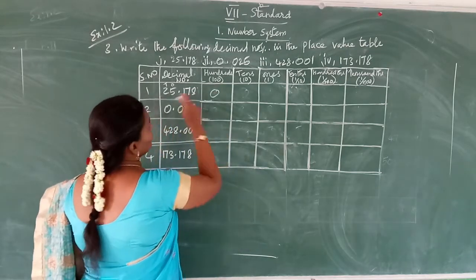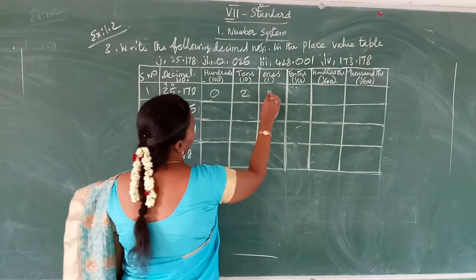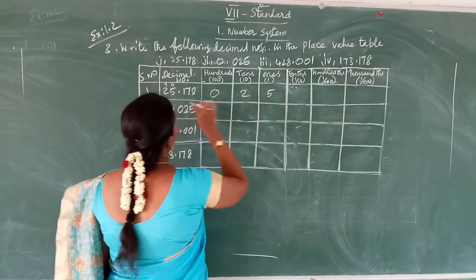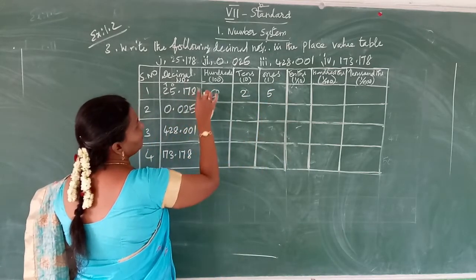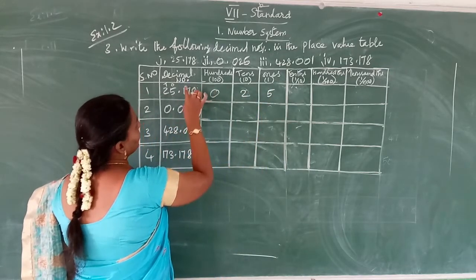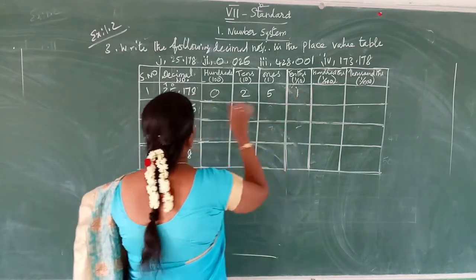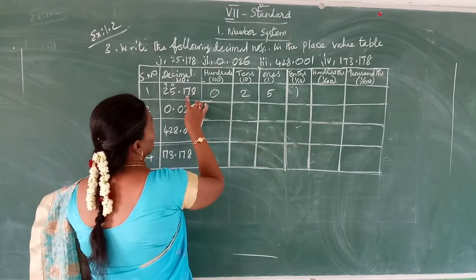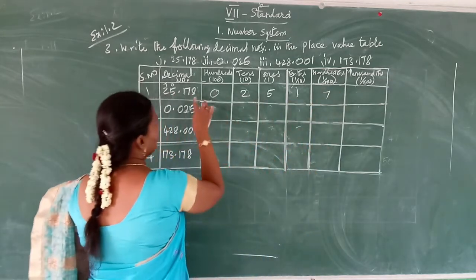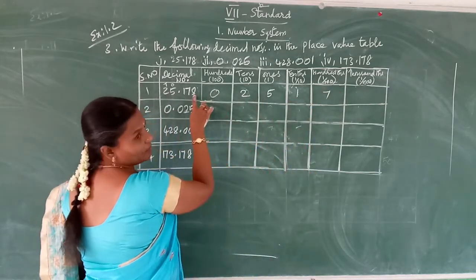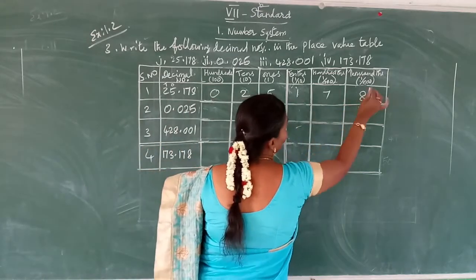So the tens space is two and ones space is five. Point — it's the decimal part. The tenths space is one, the hundredths space is seven, and the thousandths space is eight.